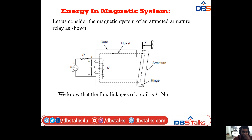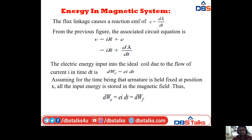Coming to the energy in the magnetic system — we consider the magnetic system of an attracted armature relay as shown. The setup has supply voltage V, resistance, and a coil with N turns, EMF e, and current I. The coil is connected to a core with flux, and there is an armature relay with hinge and ground connection. The flux linkages of the coil are λ = N · φ.